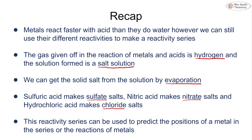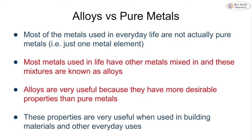When we look at the metals we use in everyday life, the majority are actually not the pure metal — they're not just made of one metal element, for example gold, copper, or iron. The majority of metals we use in everyday life actually have other metals mixed in, and these mixtures are known as alloys. Alloys are mixtures of different metals, and sometimes non-metals can be added in too.